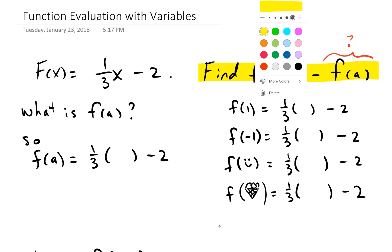What is f(a)? Well, what is f(1)? f(1) is just a function evaluated at 1, so wherever there was an x, which there was an x right here, you plug in 1. So we have 1/3 times 1 minus 2.